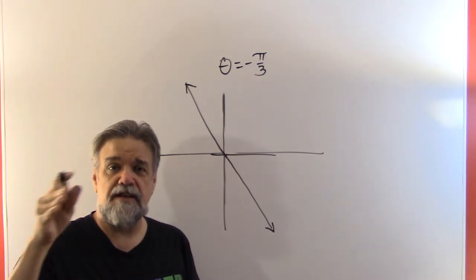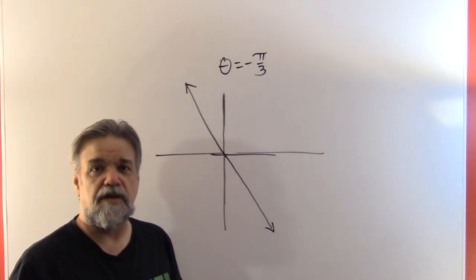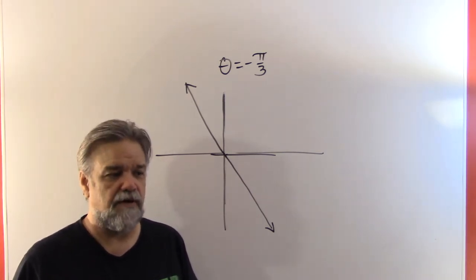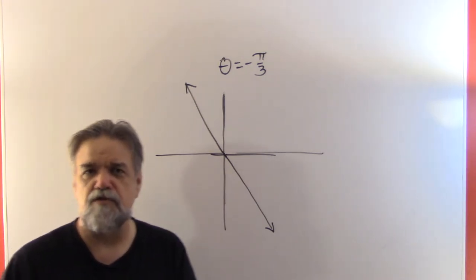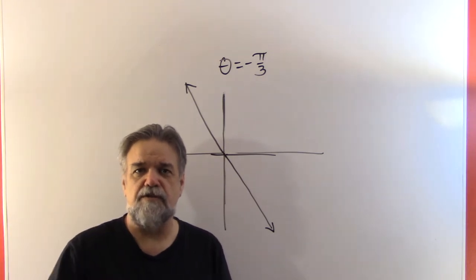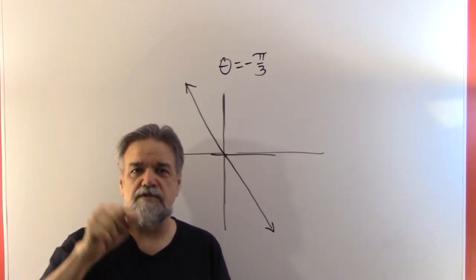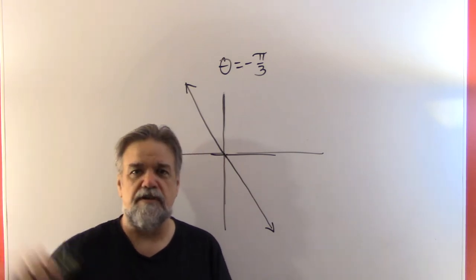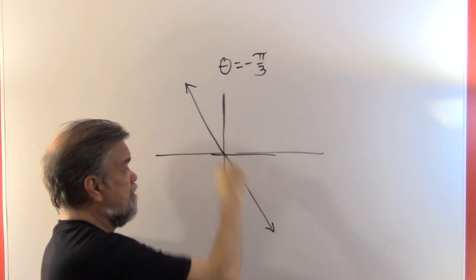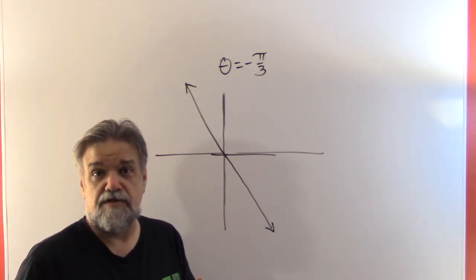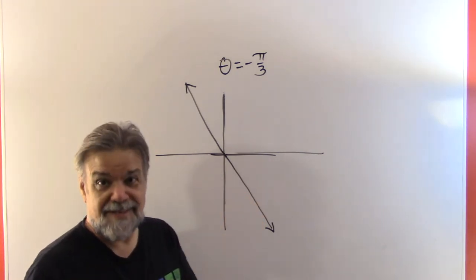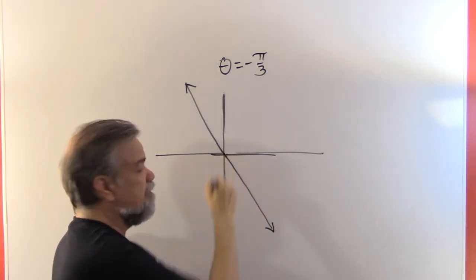So whenever you have theta equals a constant, the graph is going to look like a straight line going through the origin. Think about Cartesian coordinates: if you have x equals a number, you get a straight vertical line; if you have y equals a number, you get a straight horizontal line. Well, here, if you have theta equals some constant, it can be any slope you want, but it's always going to go through the origin.